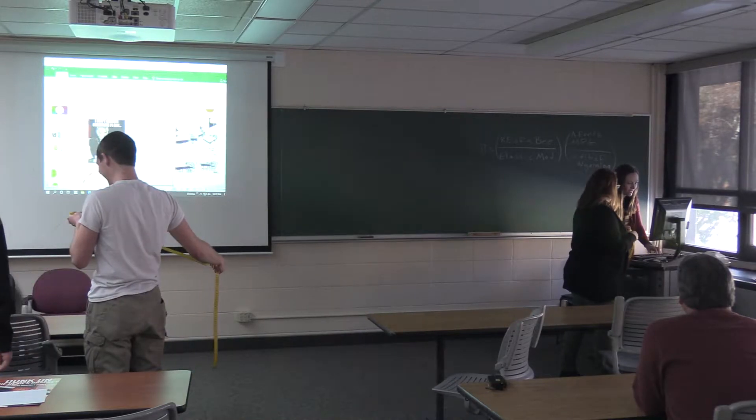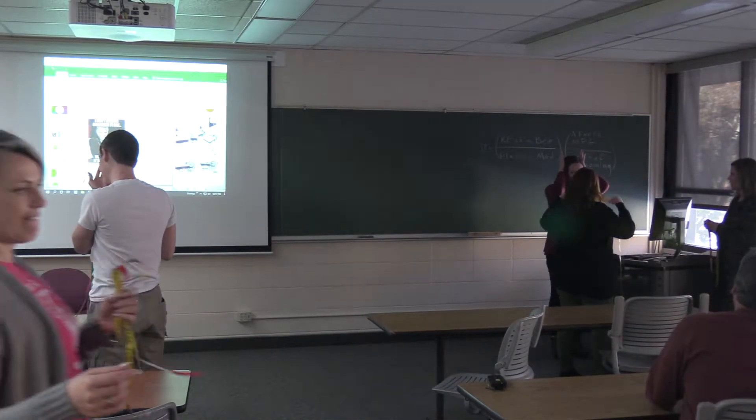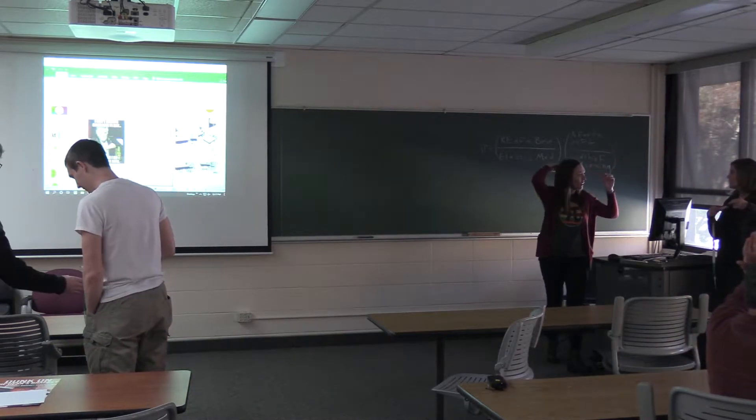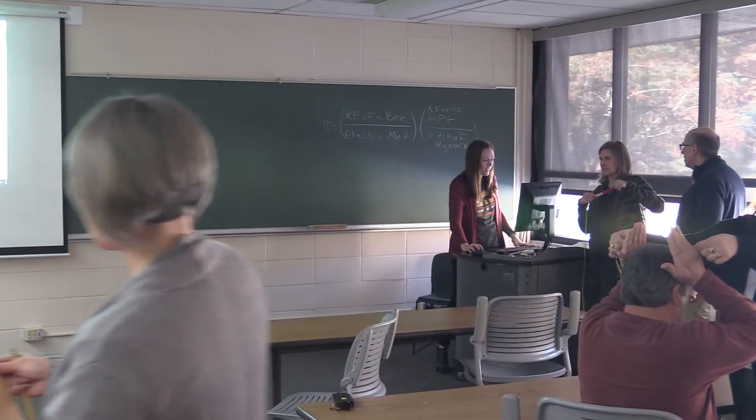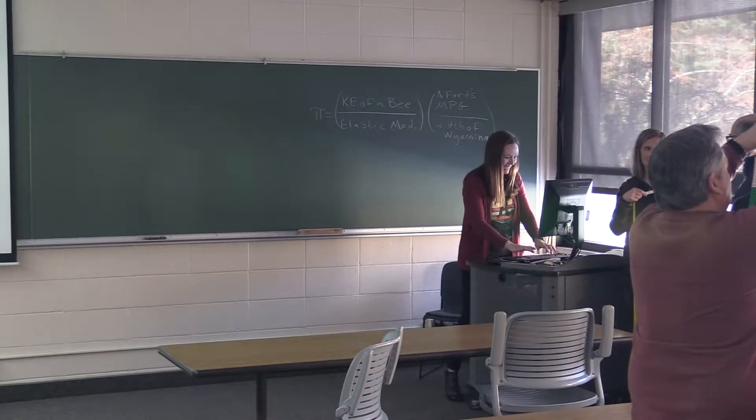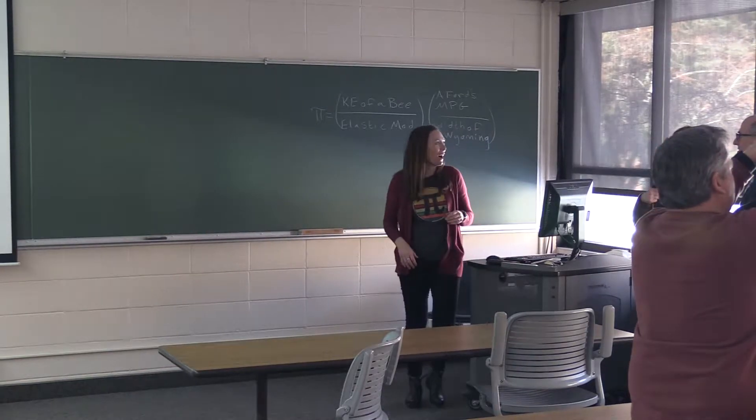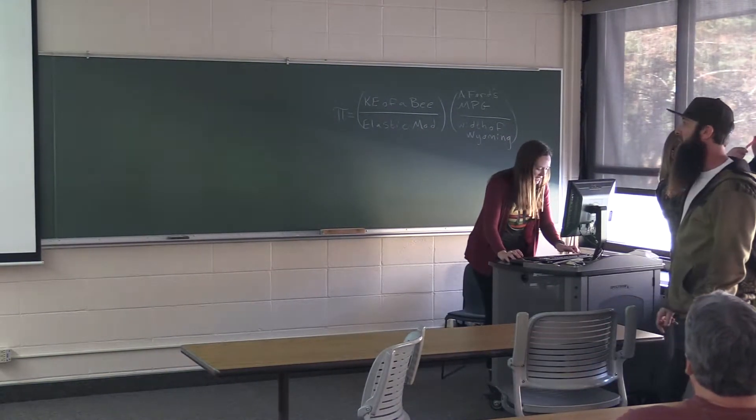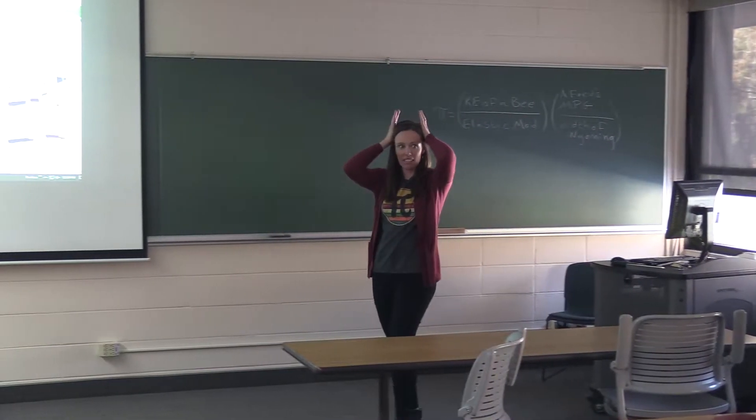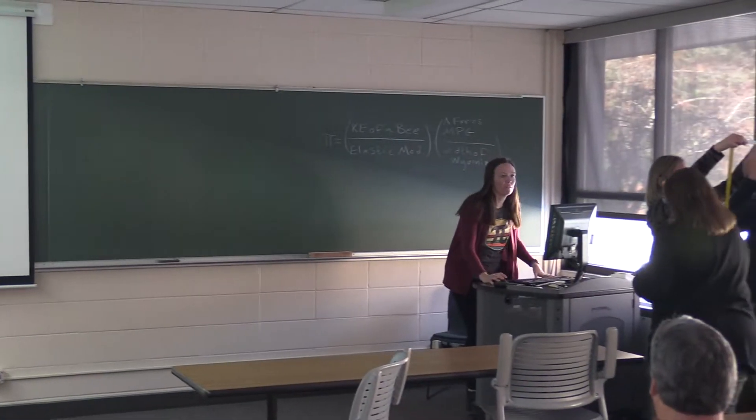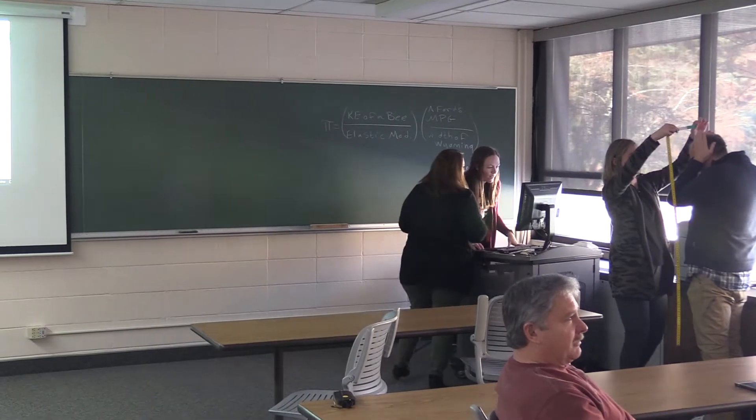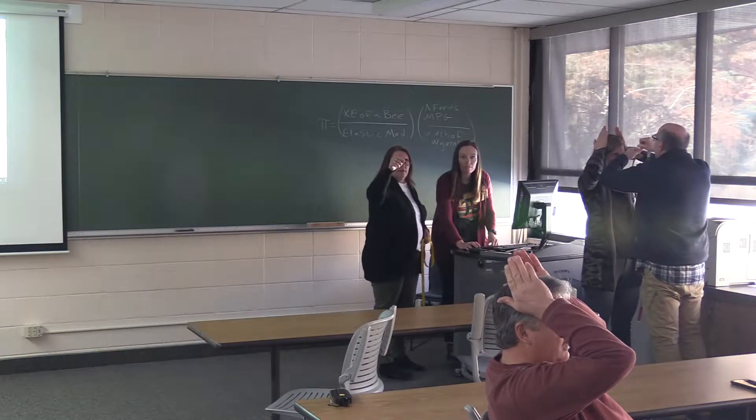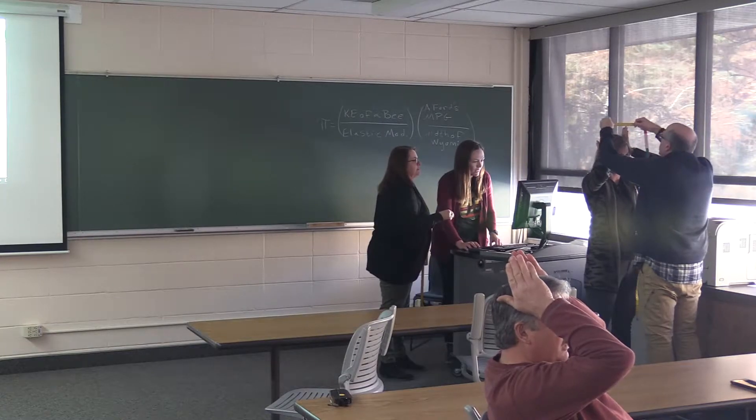Write these numbers down and come tell them to me. What do you have? Fifty-nine for circumference. And now do diameter. That one's going to be a little harder. You could hold your hands up like this and measure in between your hands. Fifty-six point five.